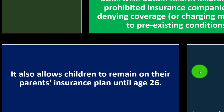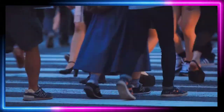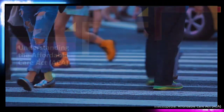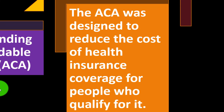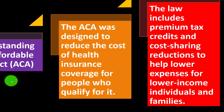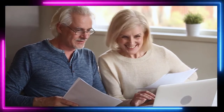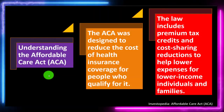The ACA also allows children to remain on their parents' insurance plan until age 26. The ACA was designed to reduce the cost of health insurance coverage for people who qualify. The law includes premium tax credits and cost-sharing reductions to help lower expenses for lower-income individuals and families. Part of the idea was to eliminate the free rider effect so that people not paying for insurance would pay, which would hopefully lower the cost. To do that, they subsidized the insurance so that people who couldn't afford it wouldn't be made worse off.